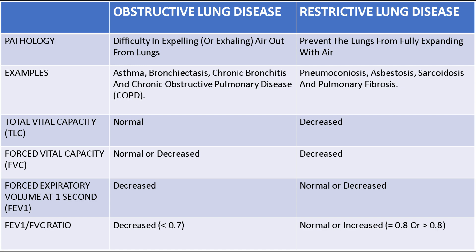Total lung capacity remains normal in obstructive lung disease but is decreased in restrictive lung disease. Forced vital capacity remains normal in obstructive lung disease but is always decreased in restrictive lung disease. FEV1 is decreased in obstructive lung disease but remains normal or may decrease in restrictive lung disease. The FEV1/FVC ratio is decreased in obstructive lung disease — less than 0.7 — while in restrictive lung disease it is normal or increased, equal to or greater than 0.8.